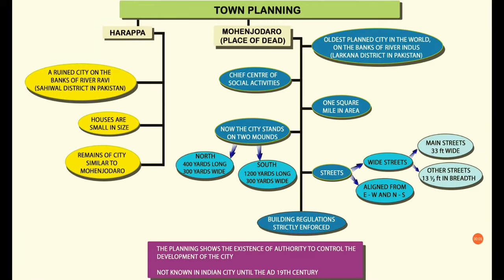Town planning. Under town planning, we will discuss the Harappan and Mohenjo-Daro city structure and architecture, their houses, roads, and drains. Harappa is a ruined city on the bank of the River Ravi in Sahiwal district in Pakistan. The remains of Harappa are similar to those of Mohenjo-Daro in terms of architecture and structure. Mohenjo-Daro is known as the place of the dead because many skeletons were found there. It is one of the oldest planned cities in the world, situated on the River Indus in Larkana district in Pakistan.